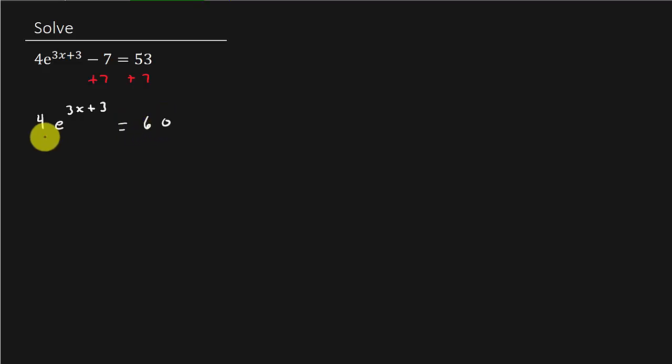And then we want to divide everything by 4 to get the e by itself. So that is going to give us e raised to the 3x plus 3 equals 15.